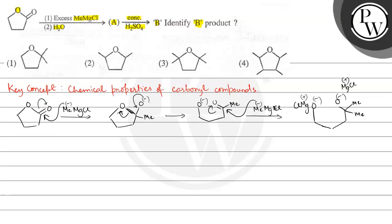Now when we add water in the next step, then O minus is protonated to form this structure: OH and CH2 and CH2, then one more CH2, and here we have OH, methyl and methyl.